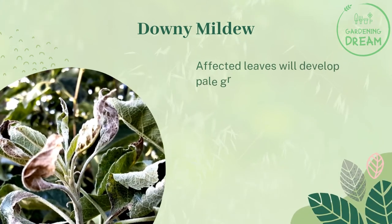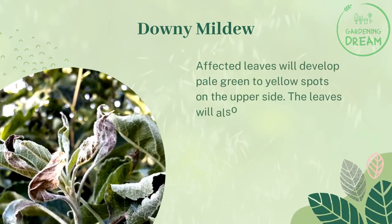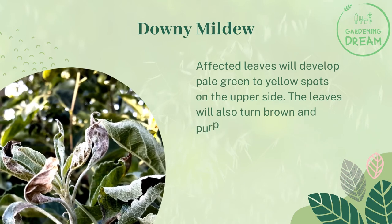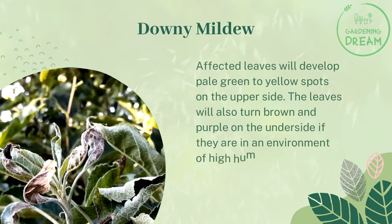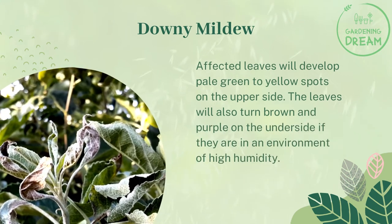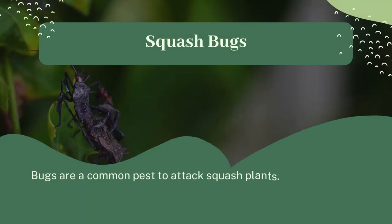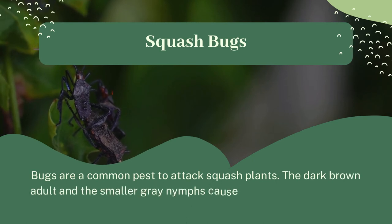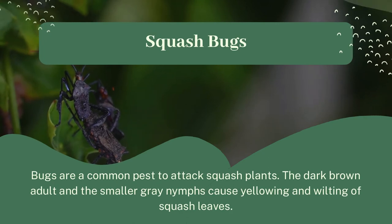Downy Mildew: Affected leaves will develop pale green to yellow spots on the upper side. The leaves will also turn brown and purple on the underside if they are in an environment of high humidity. Squash Bugs: Bugs are a common pest to attack squash plants. The dark brown adult and the smaller gray nymphs cause yellowing and wilting of squash leaves.